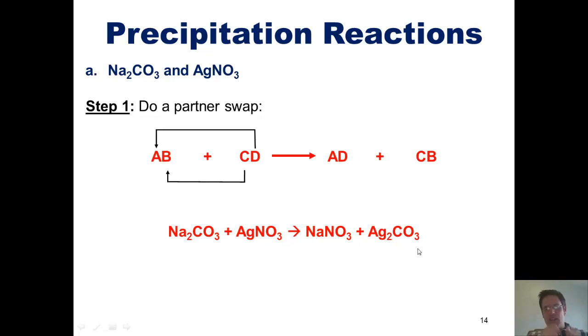Now, one thing that confuses students quite often is why we select the subscripts that we do. In fact, this confuses students all the time. Here's what I'm going to tell you. Polyatomic ions like carbonate, CO3, and nitrate, NO3, always just have the subscripts that they have.